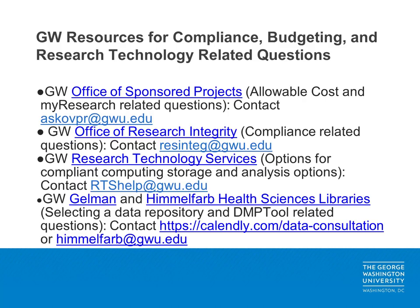For GW researchers in need of assistance with preparing a data management and sharing plan, there are a number of offices that can provide support. The GW Office of Sponsored Projects can answer questions about allowable costs and questions related to the My Research System. The GW Office of Research Integrity can help answer compliance-related questions. The GW Research Technology Services Group can help researchers explore options related to compliant computer storage and analytics options.